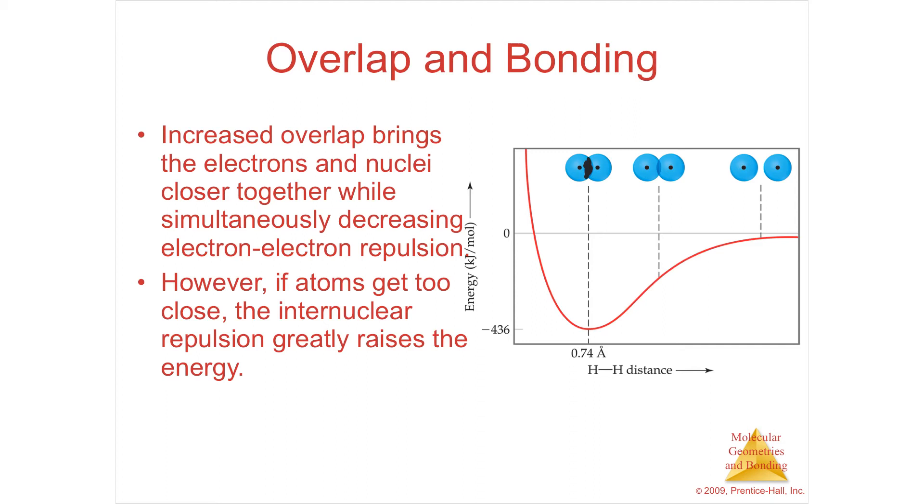If you have it too far away, you're not going to get a lot of pull, because the nucleus is not close enough to those electrons to pull them to themselves. If you have them too close together, with a very huge overlap, then what's happening is that the nucleus, which is at the center of that, is pushing against the other nucleus. The nuclei are too close together. You've got positives pushing on positives, so it can't be too close together, and it can't be too far away from each other.